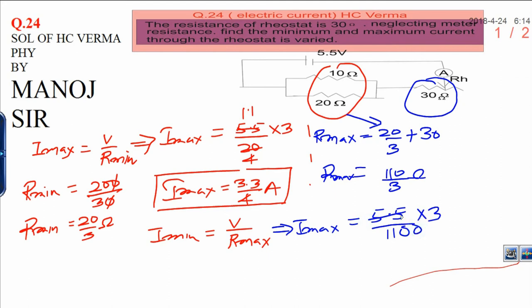11, 55, 55 and 11, 115. That is 0.15 ampere. This is the minimum current and this is the maximum current in the circuit. Thank you.